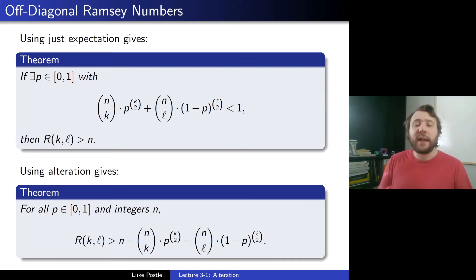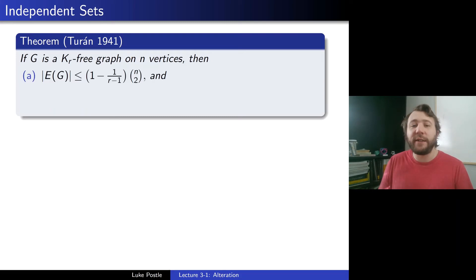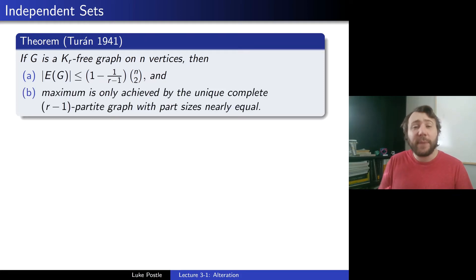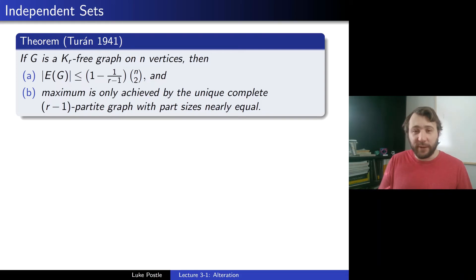Now we move from Ramsey numbers to independent sets, related to Turán's theorem from 1941, a standard result in extremal graph theory. It says that if G is a K_R-free graph on N vertices, then the number of edges is at most (1 minus 1 over R minus 1) times N-choose-2, and the maximum is achieved only by the complete (R-1)-partite graph with part sizes nearly equal. We won't prove that — you can find it in Diestel — but we'll point out a connection to probabilistic methods.